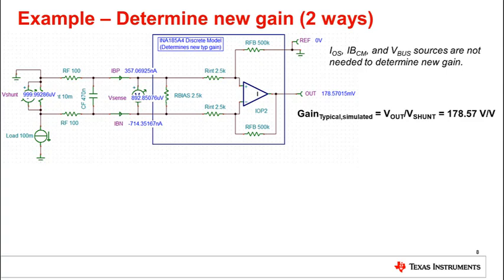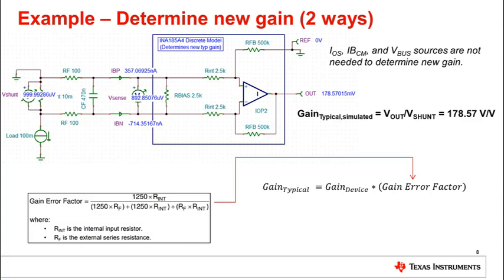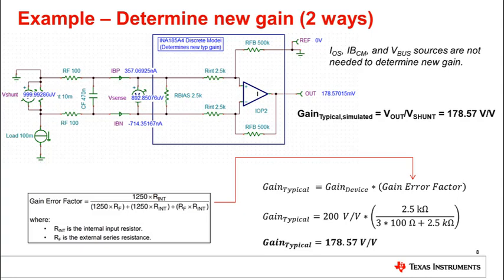Of course, a designer can theoretically calculate the gain, and in many datasheets we include the equation to do so. To use this equation, simply multiply the gain error factor with the device gain. Here, we calculate 178.57 volts per volt, which matches our simulated gain value exactly.